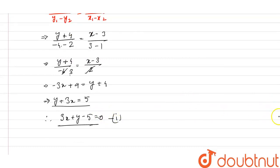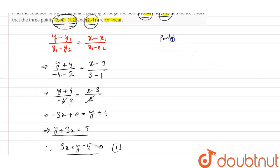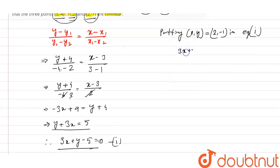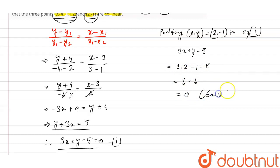Putting x = 2, y = -1 in equation 1, which is 3x + y - 5: we get 3 × 2 + (-1) - 5 = 6 - 1 - 5 = 0. The equation is satisfied, so these three points are collinear.